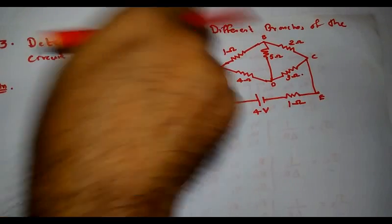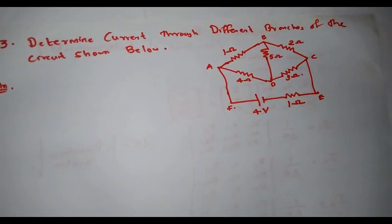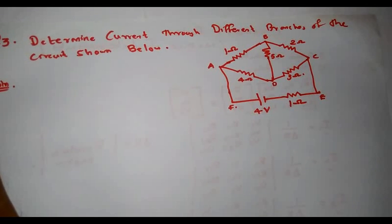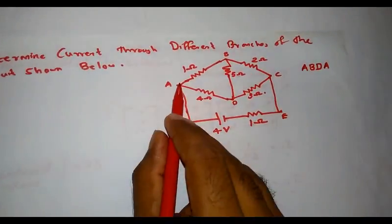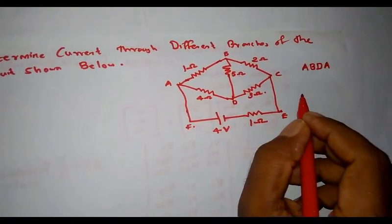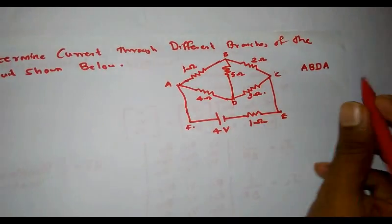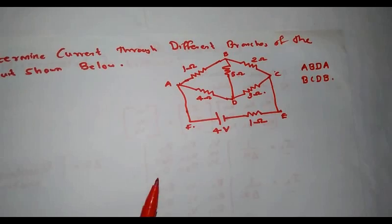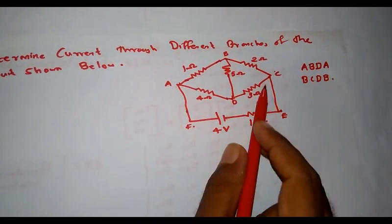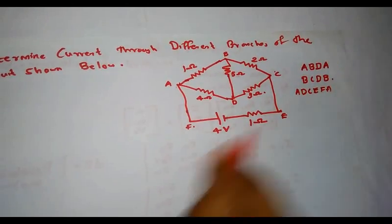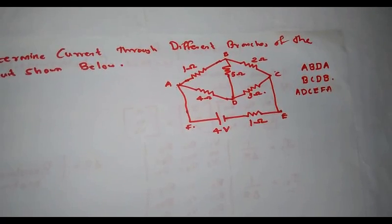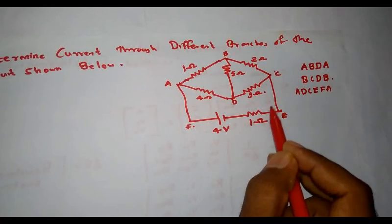I have assigned alphabets for the different nodes so that I can name the meshes in the circuit. Here I have three closed circuits or meshes or loops. The first mesh is A-B-D-A. The second mesh can be assigned as B-C-D-B. The third mesh is A-D-C-E-F-A. These are the three closed circuits visible in this circuit.